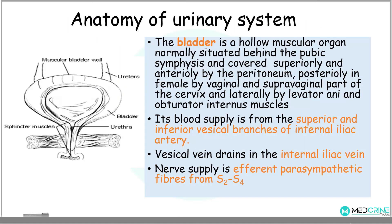Before we continue, let's have a brief overview of the urinary bladder anatomy. The urinary bladder is a hollow muscular organ situated in the groin region, behind the pubic symphysis and covered superiorly and anteriorly by a peritoneum — a membranous lining covering the abdomen. Posteriorly, the urinary bladder is covered by the vagina and the supravaginal part of the cervix in females. Laterally, it is bordered by the levator ani muscle and the obturator internus muscle.